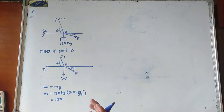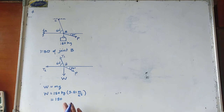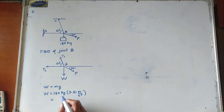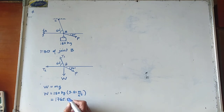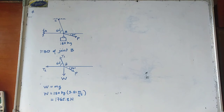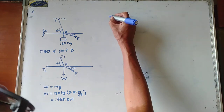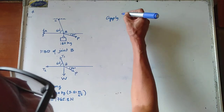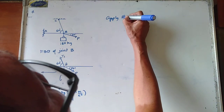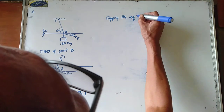1 kilogram·meter per second squared equals 1 newton. Hence, 180 times 9.81 is 1765.8 newtons. Now, applying the equations of equilibrium.